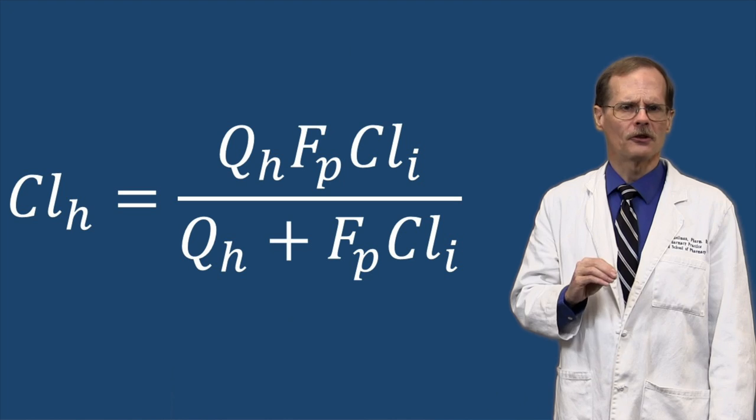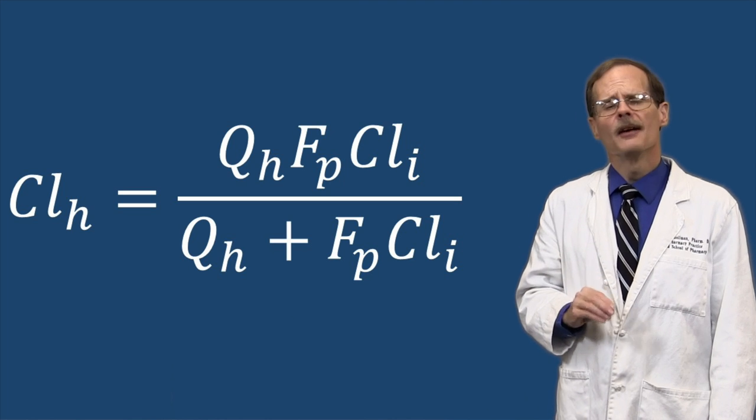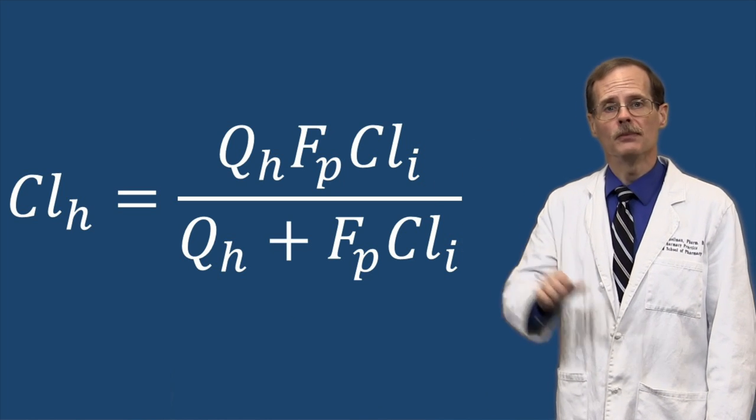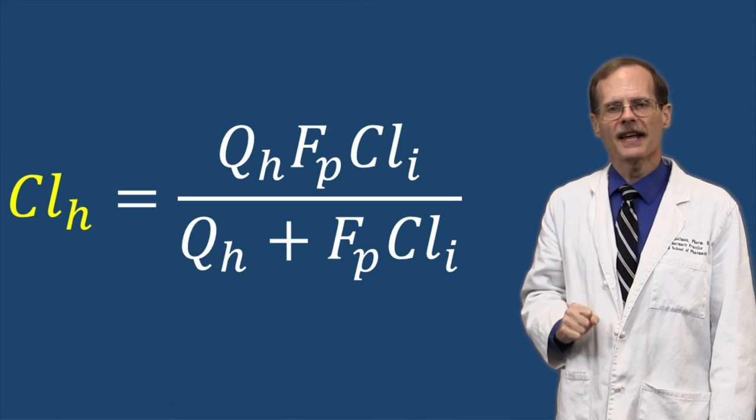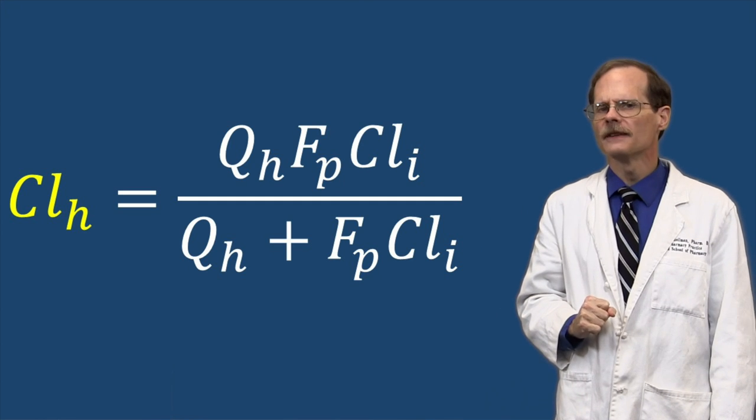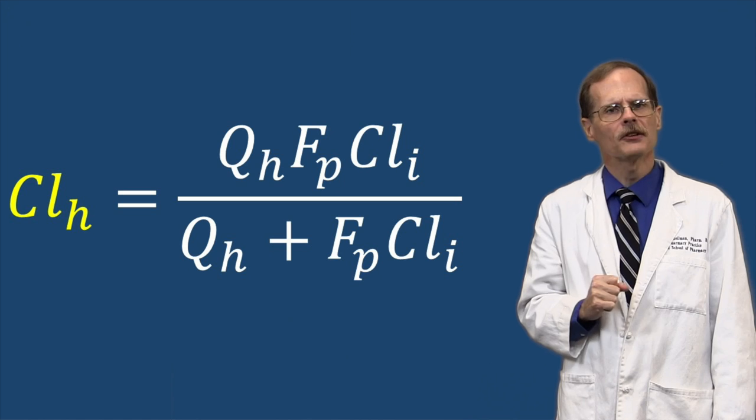The equation for the well-stirred model looks a little bit intimidating, but it really only has four variables. The first is hepatic clearance, which is how quickly the liver can clear drug from a particular volume of blood.